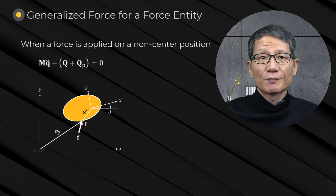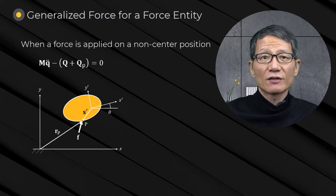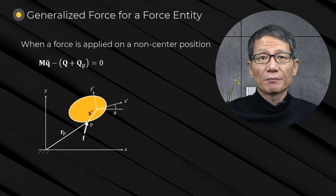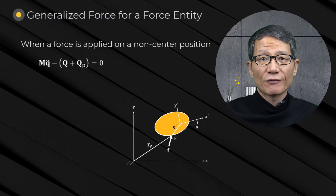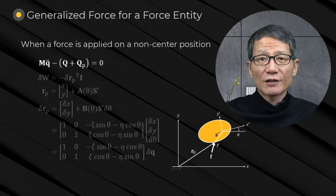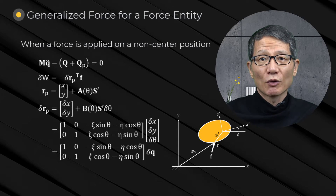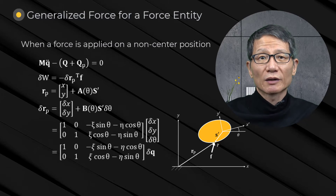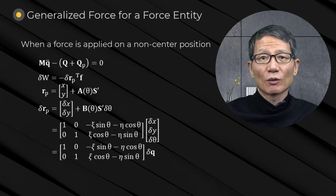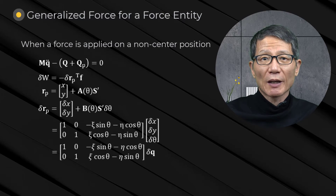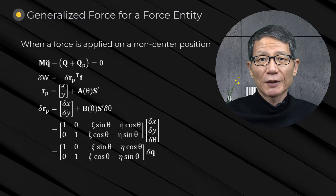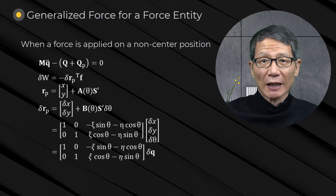Suppose a force p is applied at a non-centroidal point p, as shown in this figure. The generalized force Qp must be calculated and added to the equations of motion. The virtual work done by force p is obtained by the dot product of the virtual displacement of the application point p and the applied force vector.